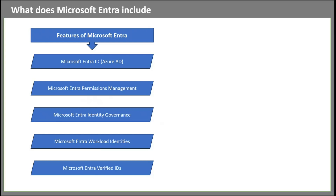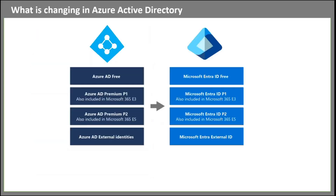Apart from this change, there are a few more changes happening in Azure Active Directory. For example, Azure AD Free license will be renamed to Microsoft Entra ID Free. Azure AD Premium P1 license will be renamed to Microsoft Entra ID P1. Azure AD P2 license will be renamed to Microsoft Entra ID P2. And Azure AD External Identities will be renamed to Microsoft Entra External ID. As per Microsoft's official documentation, the display name of the licenses will change on 1st October 2023.